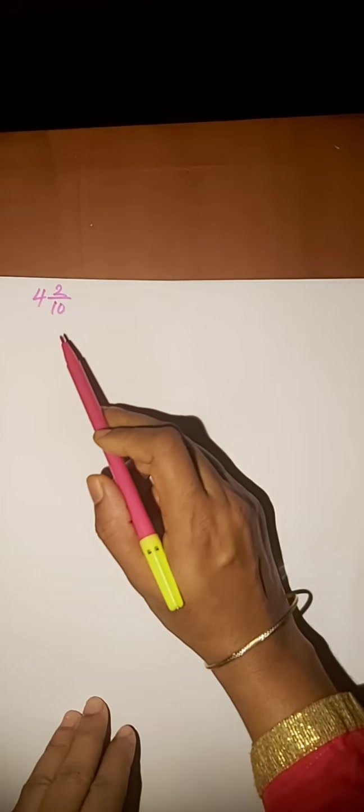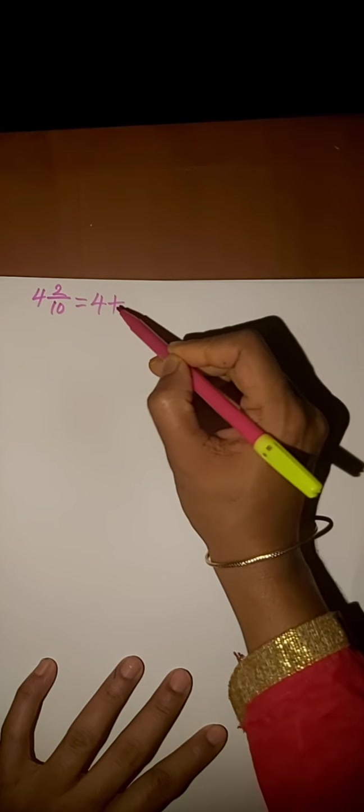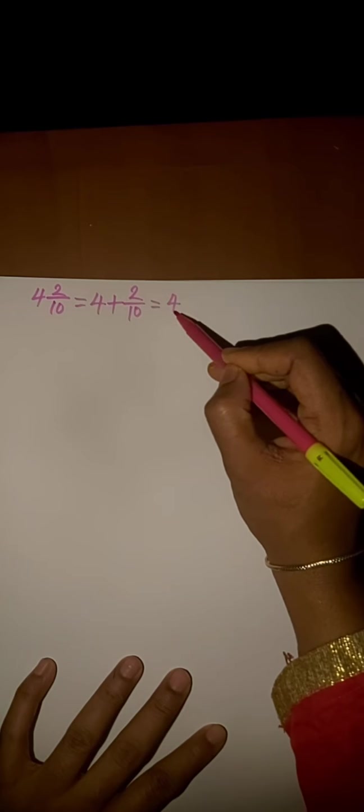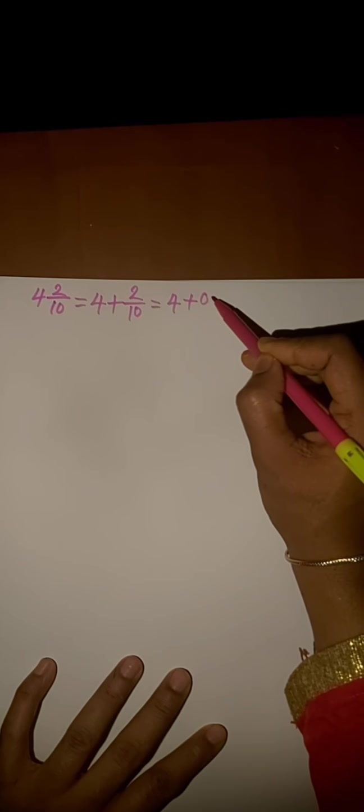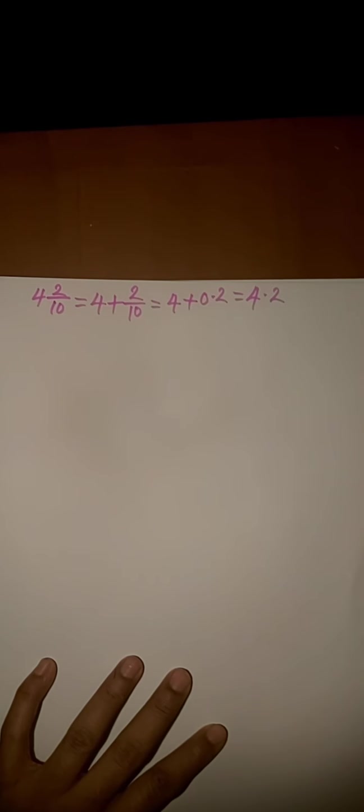Next question, 4 and 2 by 10. We write 4 plus 2 by 10. Here, 2 by 10 equals 0.2. 4 plus 0.2, we get the answer 4.2.